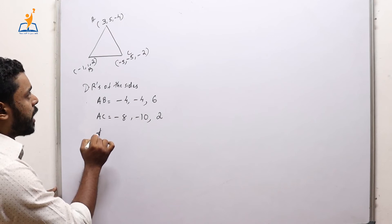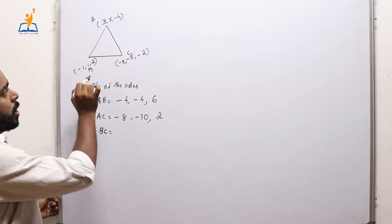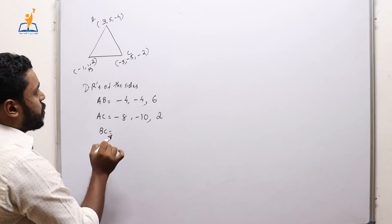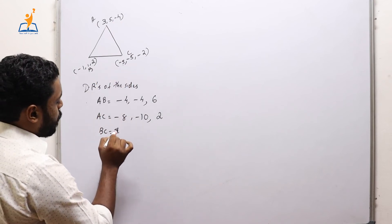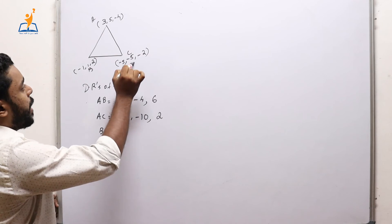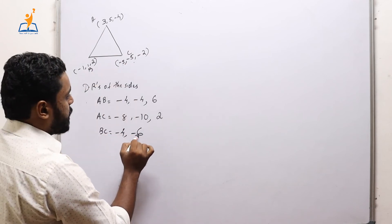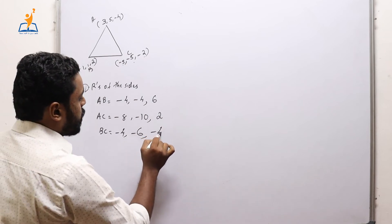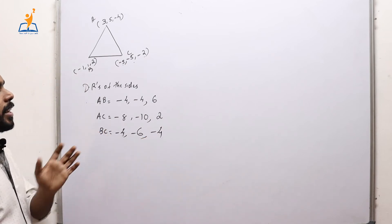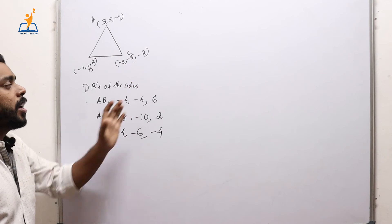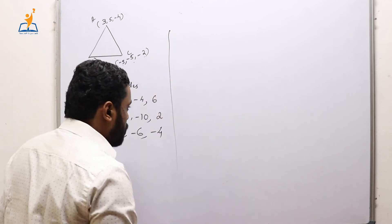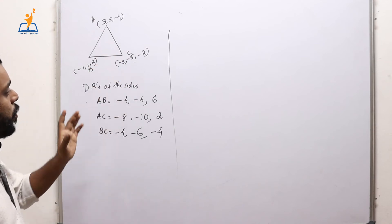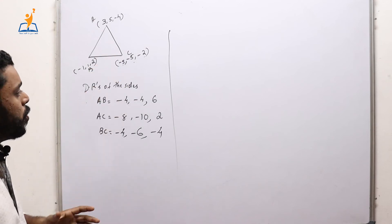Direction ratios of BC: (−5−(−1), −5−1, −2−2) = (−4, −6, −4). So we have found the direction ratios of all three sides: AB = (−4, −4, 6), AC = (−8, −10, 2), BC = (−4, −6, −4).